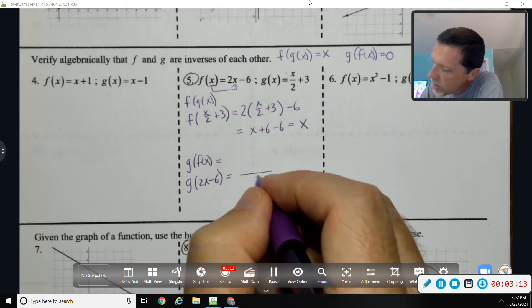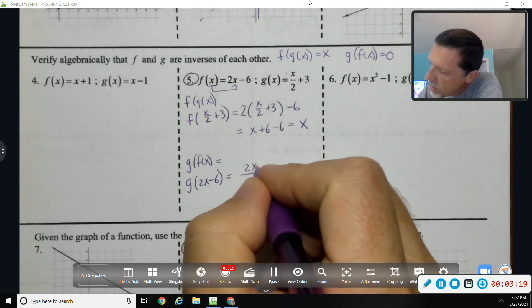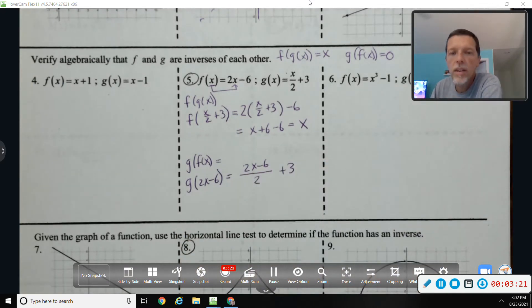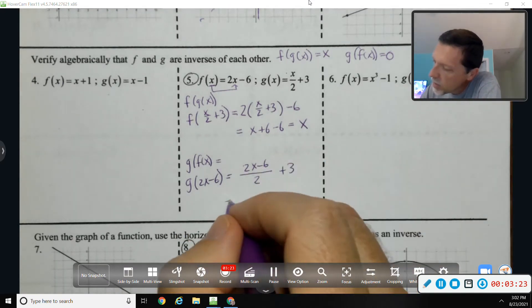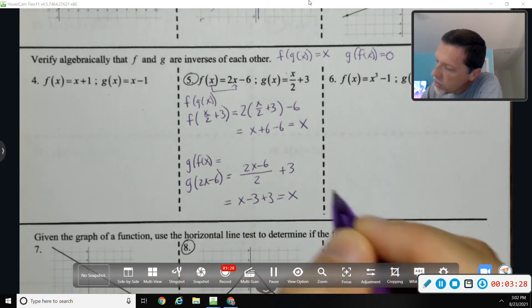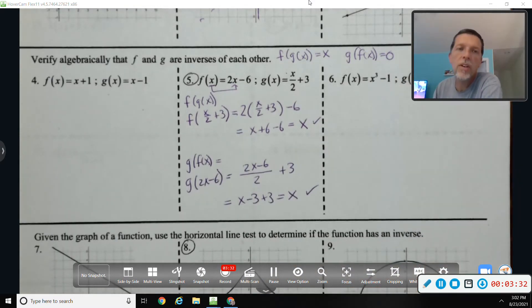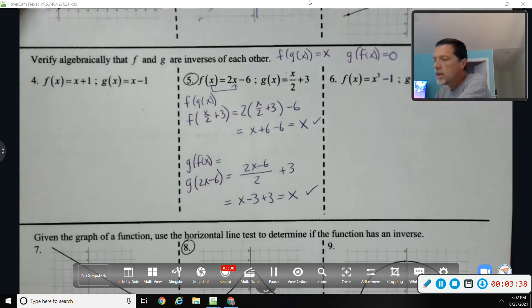So that becomes—that means that f of x is now the input to the g function. The g function is input divided by 2 plus 3, and in this case the input is 2x minus 6. Well, divide them both by 2 and we get x minus 3 plus 3 is just x, which is what we knew it would be. And so we verified that f and g are inverses of one another.